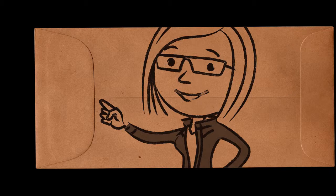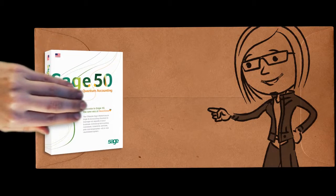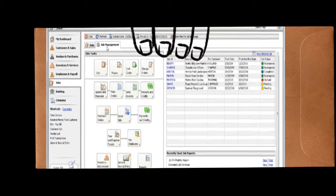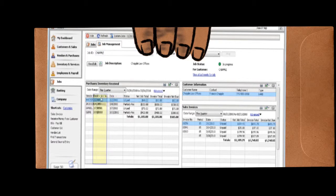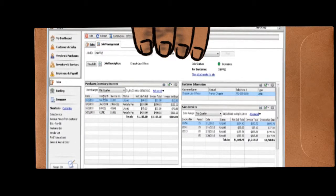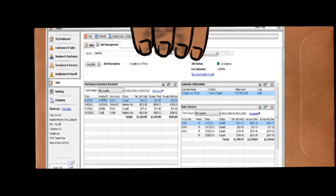At least it used to be. With Sage50 Quantum, Neil seems much more relaxed. As soon as he realized he could easily change the reporting on the dashboards to get exactly what he wanted, job reporting has become more like, well, quick draw in the Wild West.